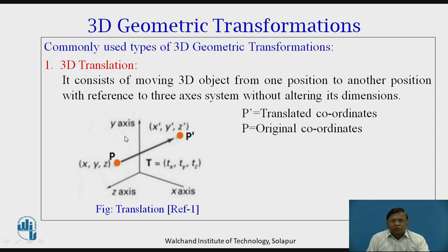In 3D translation, we are moving an object, say here a point from one position to another position, wherein we are not altering the dimensions of the object.